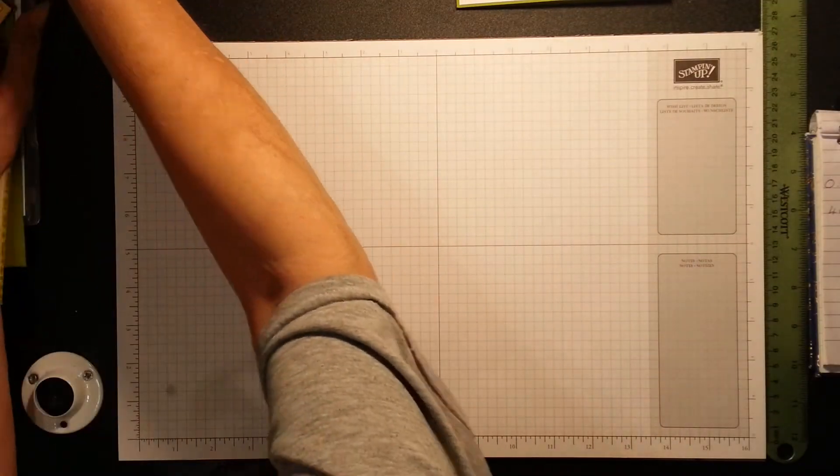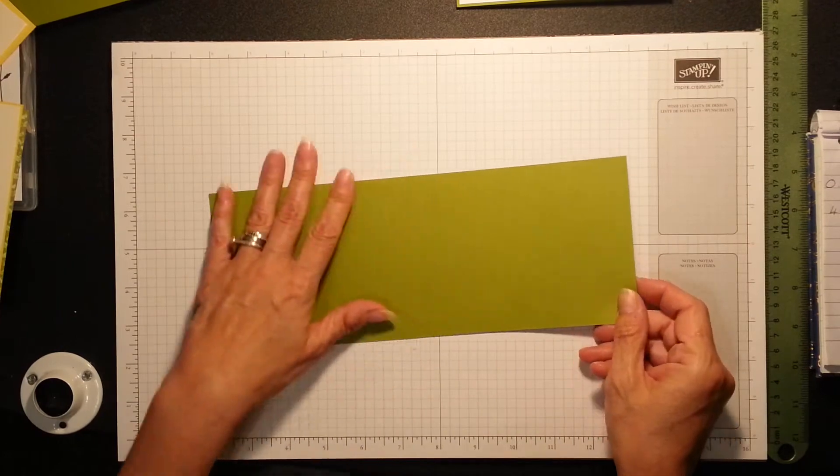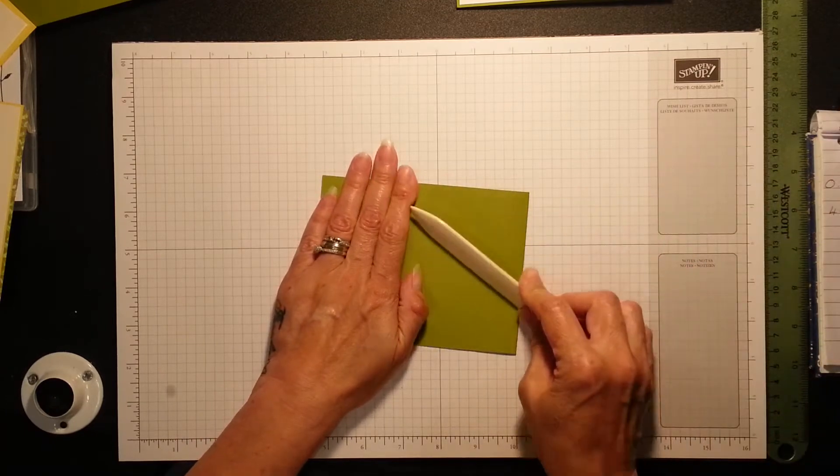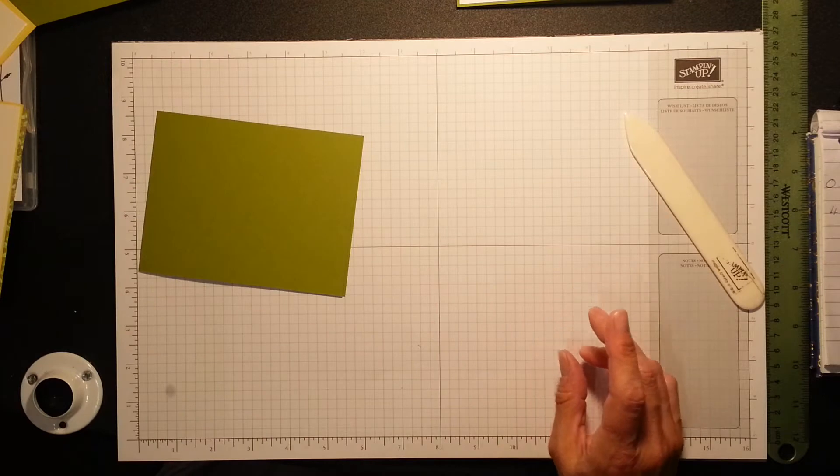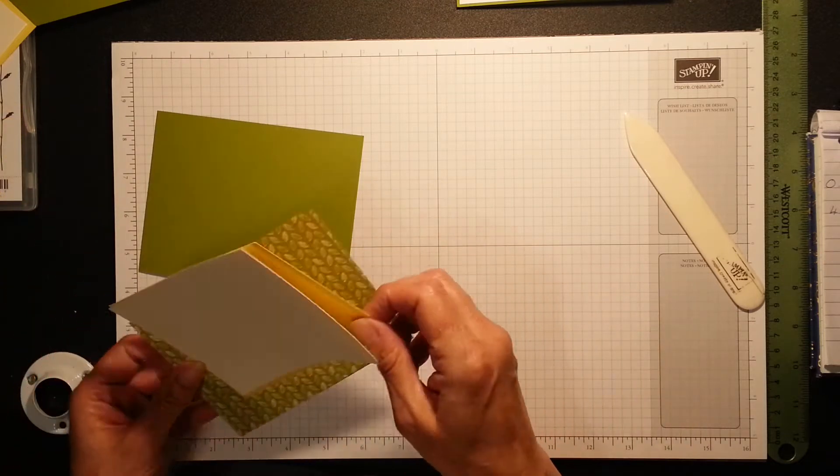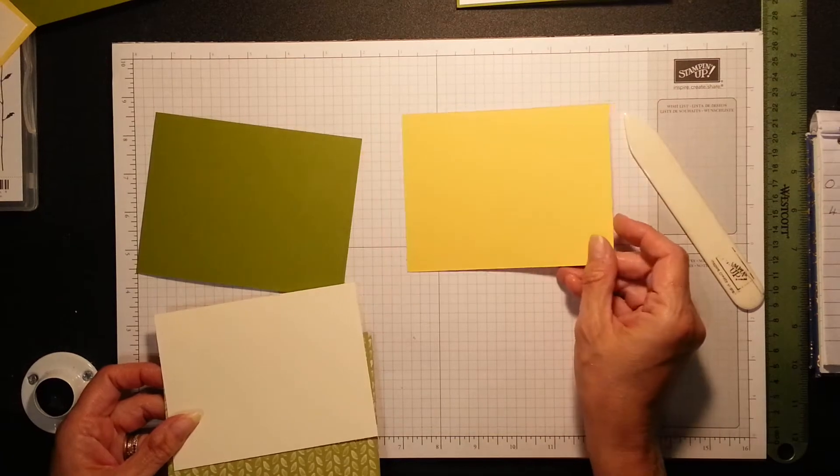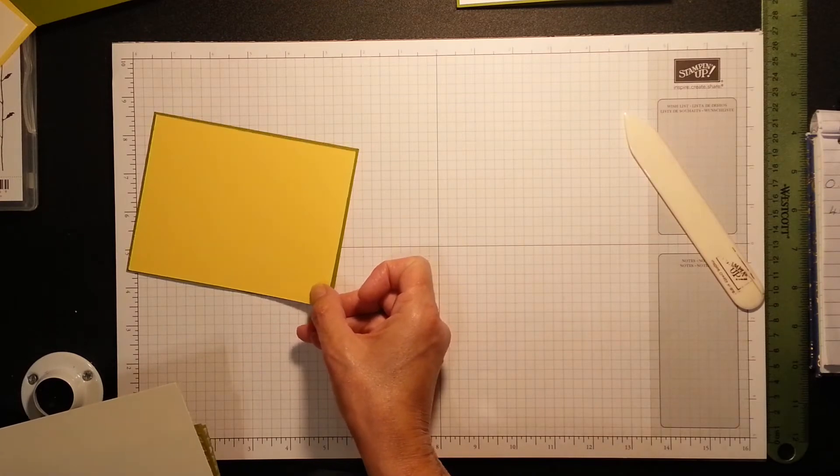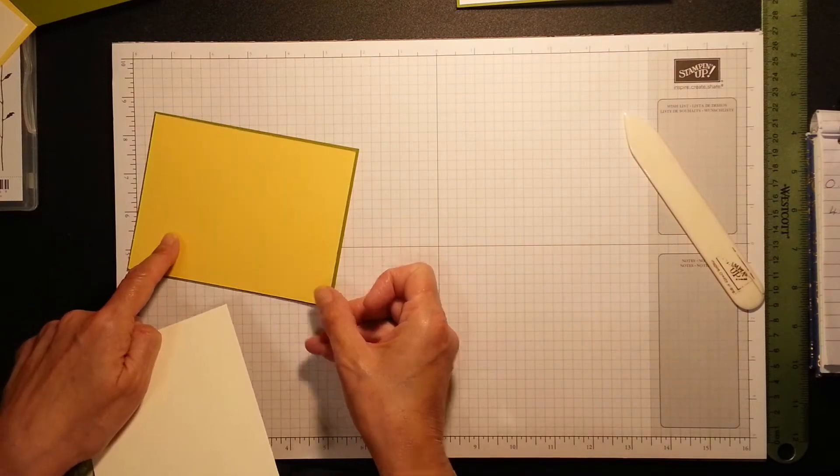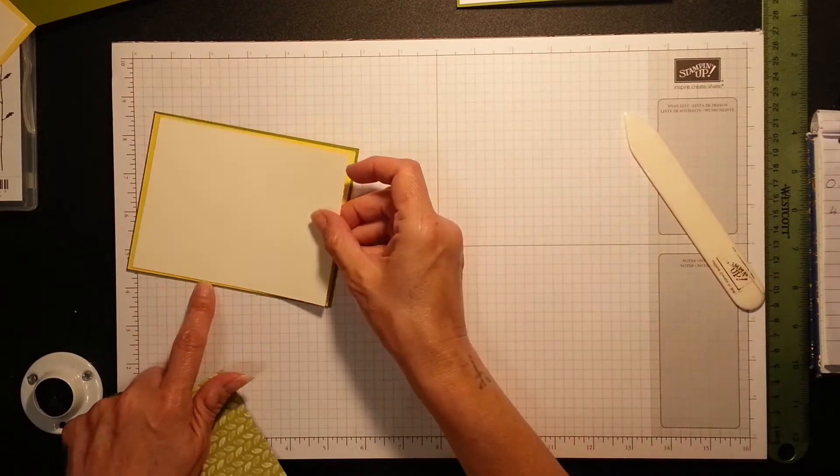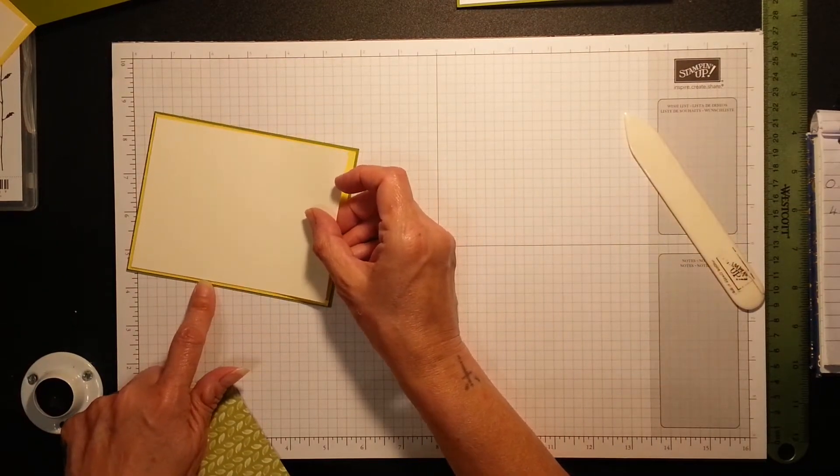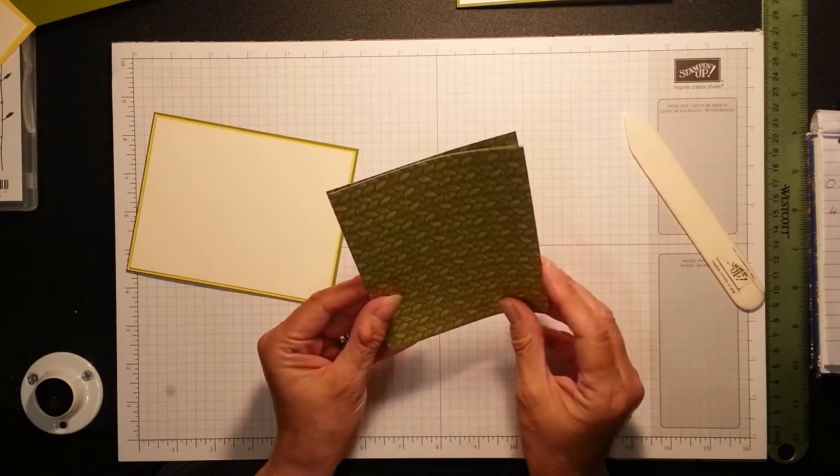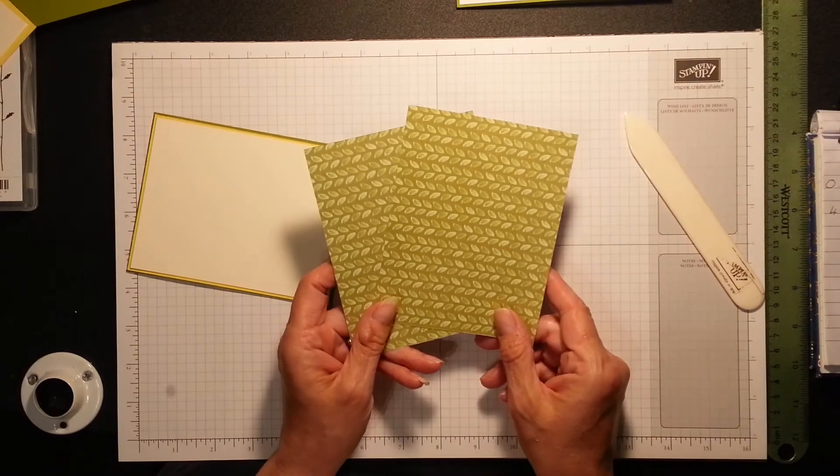So you're going to need your card base which is 11 by 4.25 and I've gone ahead and scored that in the center at 5.5. You're also going to need a piece of Daffodil Delight which is 5.375 by 4.8. That's where that extra layer comes in. And then I've got a piece of Daffodil Delight which is 5.25 by 4.25.